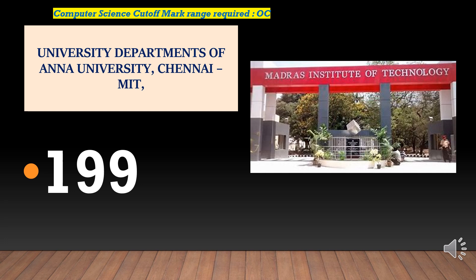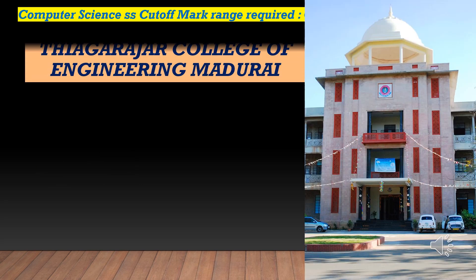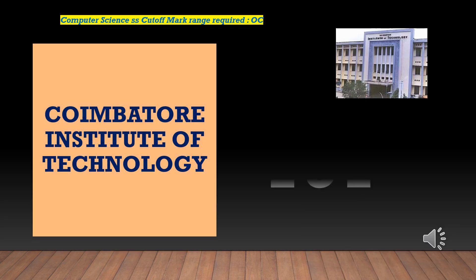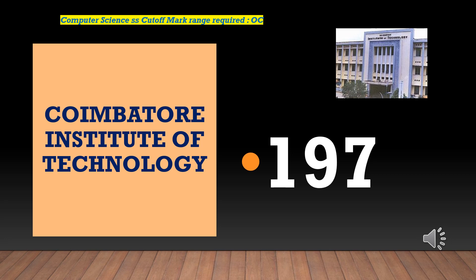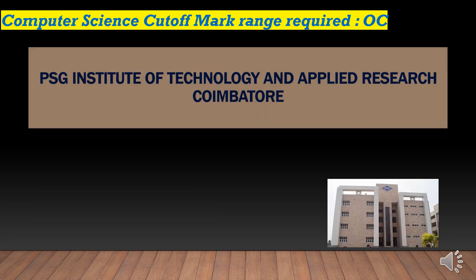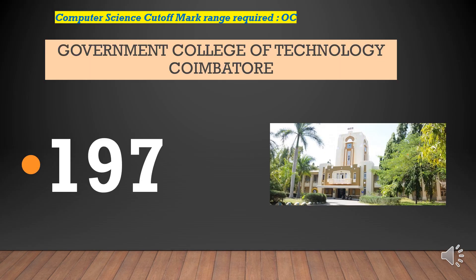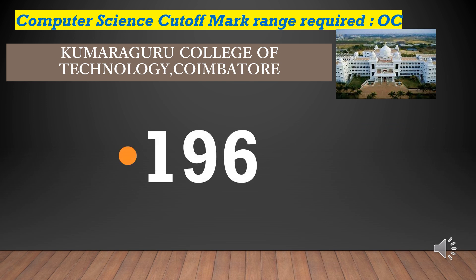Theagarajar College of Engineering — cut-off required for CSEOC is 197. Coimbatore Institute of Technology — cut-off required for CSEOC is 197. PSG Institute of Technology and Applied Research — cut-off required for CSEOC is 197. Government College of Technology Coimbatore — cut-off required for CSEOC is 197.